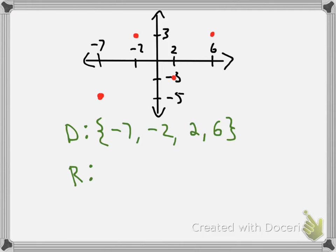For the range, we're of course going to start with a set bracket again. We're going to list out the y values that are part of the function, and the y values are negative 5, negative 3, and positive 3. Then we close our set bracket. So these are the domain and range for a relation like this — where you just have a set of points, you can simply list out the x values and the y values.